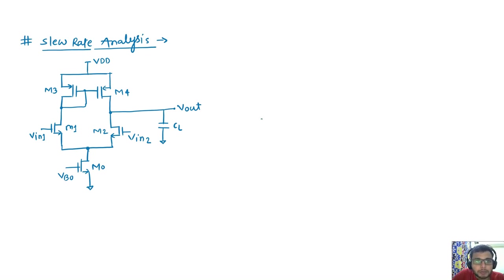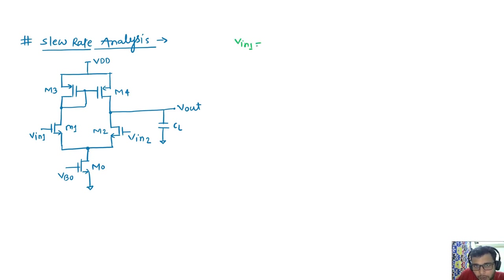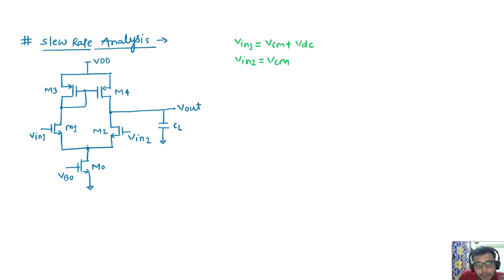Hello everyone. In this video we will see the slew rate analysis of the 5-transistor OTA, in continuation of the series. In the previous video I discussed the large signal analysis of this OTA, where I considered input 1 as some common mode voltage plus VDC, and input 2 as only the common mode. So I was varying only input 1 while input 2 was constant. We saw that with increasing V_in1, the node X voltage also increases linearly.